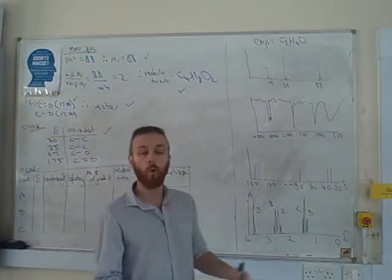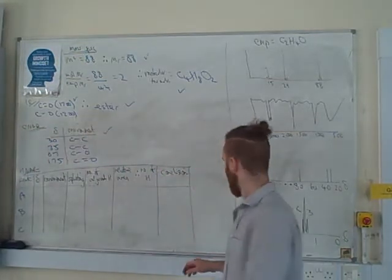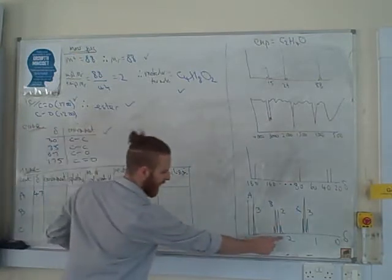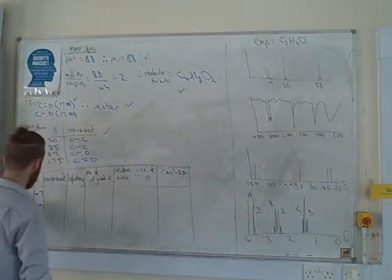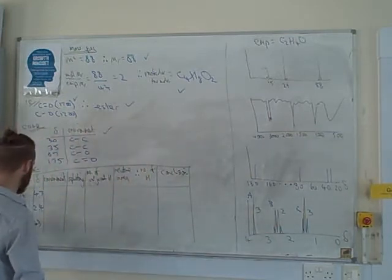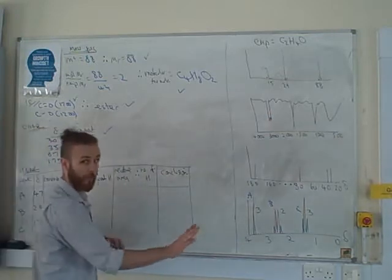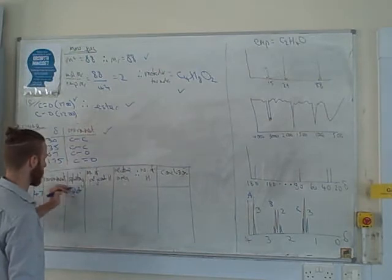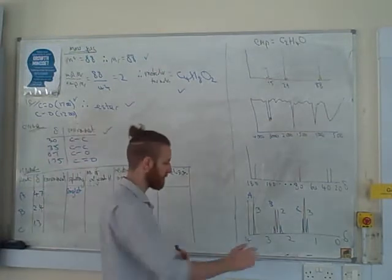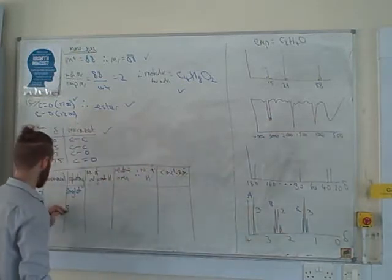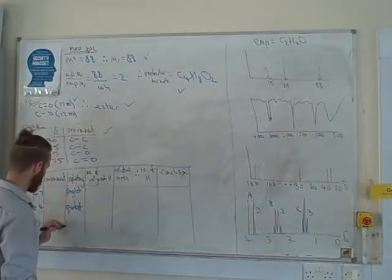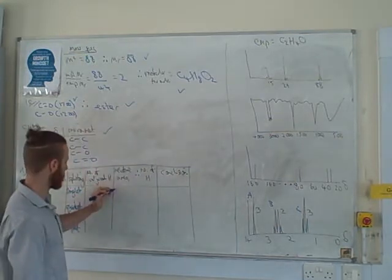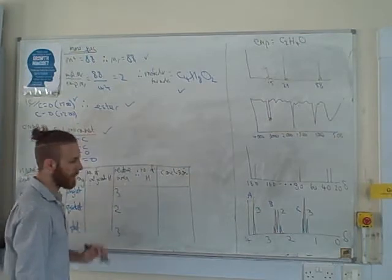So we're going to go through this graph and the columns are peak, chemical shift delta, environment, splitting, number of adjacent hydrogens, relative area, therefore number of hydrogens. Sometimes you'll see this called the integral or the integration trace. Same thing. It's like quilt and duvet. And then finally, conclusion. So roughly speaking, that's about 4.7, 2.4, and 1.3-ish. Splitting, definitely learn your splitting table, is a singlet. Quartet and triplet. And our integration traces or relative areas, 3, 2, 3.